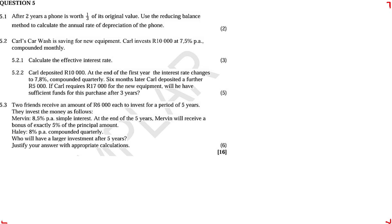Let's look at question five: financial mathematics and timelines. So, for this example paper, section 5.1 — we are given a problem on depreciation. After two years, a phone is worth one third of its original value. Use the reduction balance method to calculate the annual rate of depreciation of the phone.